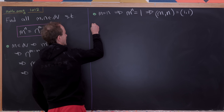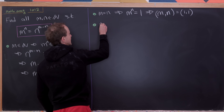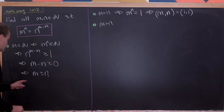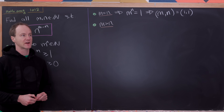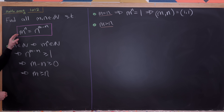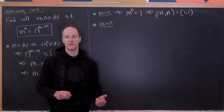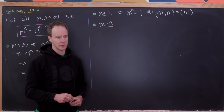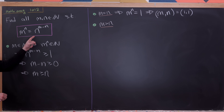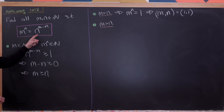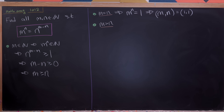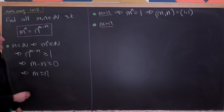Now let's go on to our second major case, which is when m is strictly bigger than n. We're going to use a fairly common strategy. We've got a single equation but two unknowns, and it's easier to solve with a single unknown. The most obvious single unknown we can get to here is m over n. We can build an m over n equation by dividing both sides by n to the nth power.